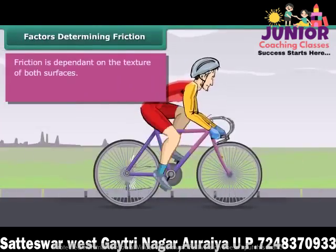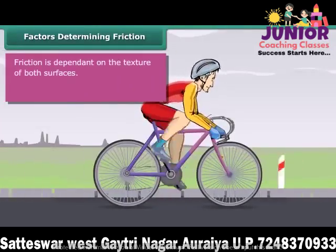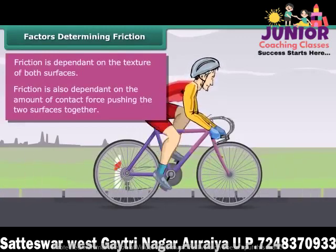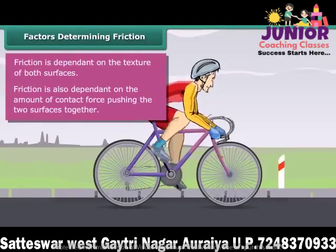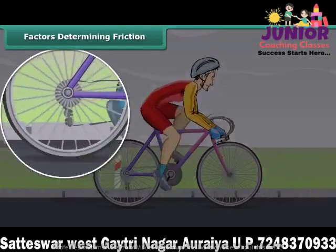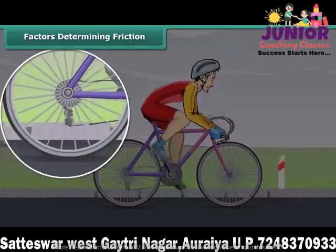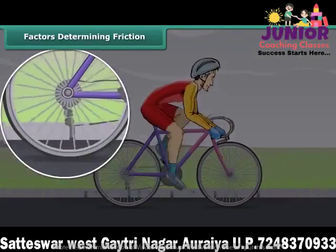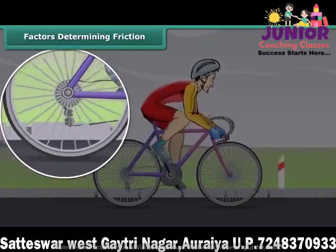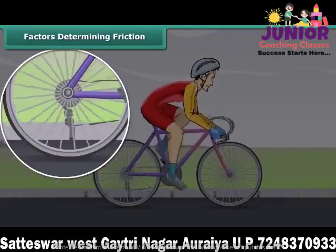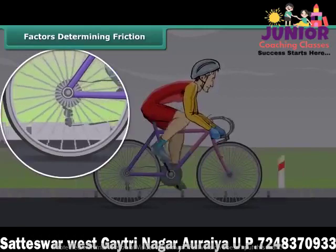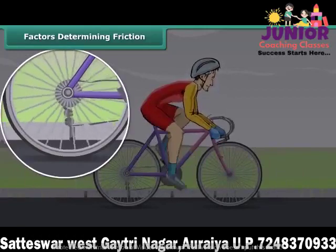Friction is dependent on the texture of both surfaces, and also on the amount of contact force pushing the two surfaces together. While in motion, the tires of the bicycle are rubbing against the surface of the road. When two surfaces rub on one another, a force comes into play. This force acts in the direction opposite to the direction of motion, thus slowing down the motion and finally bringing the moving object to a stop.